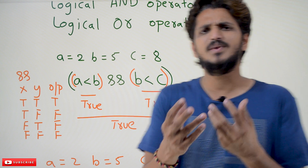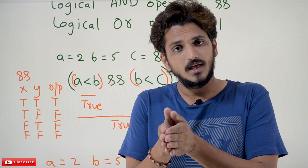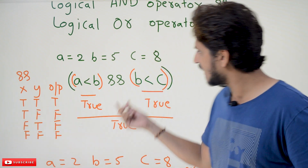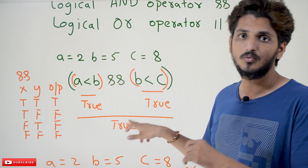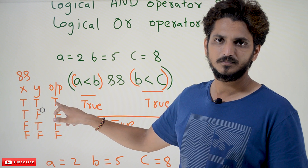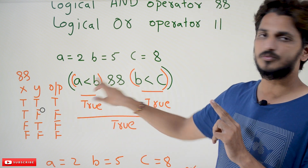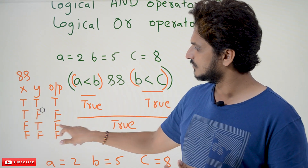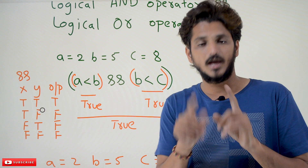Forget about logical AND — what is the simple English meaning of AND? 'He is a boy AND he is going to school.' Similarly, in logical AND, both conditions should be true, then only it provides a true value. The truth table for logical AND: true AND true gives true; true AND false gives false; false AND true gives false; false AND false gives false. Both conditions must be true, otherwise it displays false.